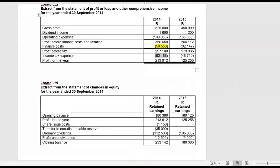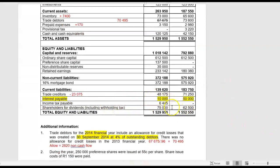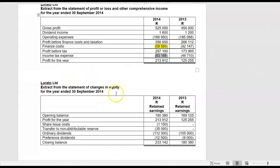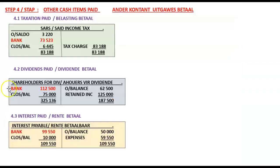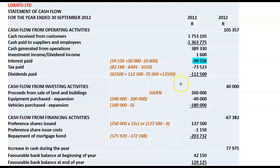Dividends paid: we had outstanding shareholders for dividends both at the end of last year and this year. Shareholders for dividends will have an opening balance of 62,500 and a closing balance of 75,000. From the extract of the statement of changes in equity there were ordinary dividends as well as preference dividends. The sum total of all dividends declared for the year was 125,000 — you have to take both of them. Shareholders for dividends: opening balance 62,500, closing balance 75,000, total dividends declared 125,000. That gives us a balancing figure of 112,500 paid to shareholders. Cash flow from operating activities: adding those together gives us 105,357.